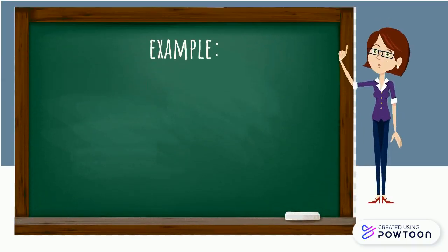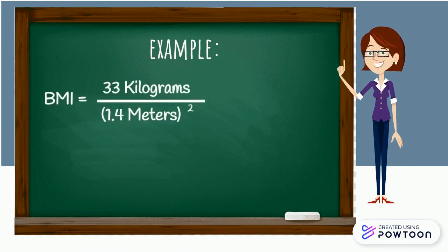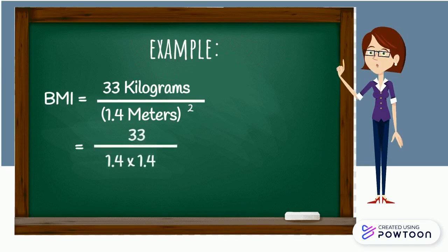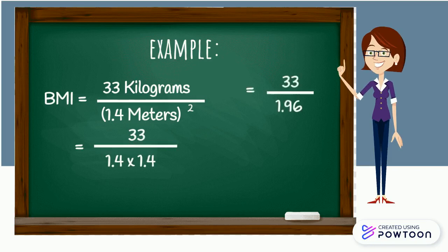To compute for BMI: BMI equals 33 kilograms divided by 1.4 squared meters, equals 33 divided by 1.4 times 1.4, equals 33 divided by 1.96. BMI is equal to 16.83.